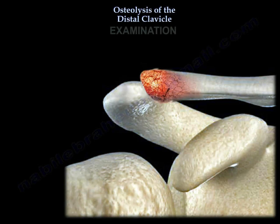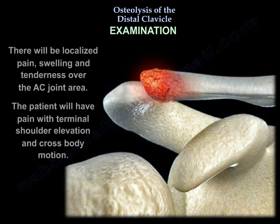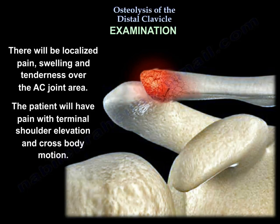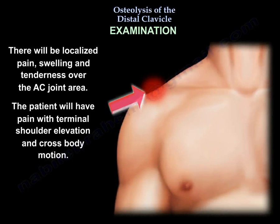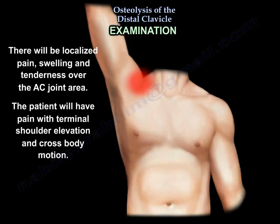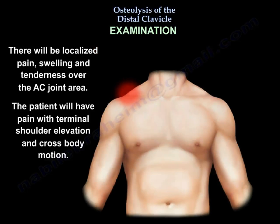In the examination, the weight lifter will come and complain that they are no longer able to lift the usual amount. You will find localized pain, swelling, and tenderness over the AC joint area, and the patient will have pain with terminal shoulder elevation and cross-body motion.